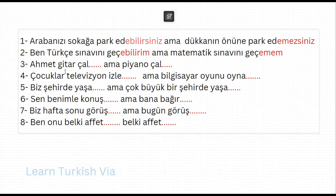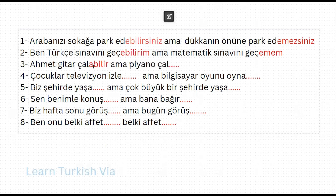In the next sentence: 'Ahmet gitar çal, ama piyano çal.' Ahmet can play the guitar – gitar çalabilir, but cannot play the piano – piyano çalamaz. 'Ahmet gitar çalabilir, ama piyano çalamaz.'